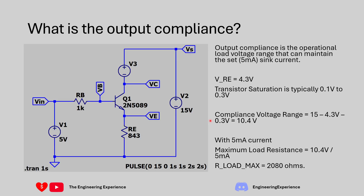The second part of the question requires calculating output compliance. Output compliance is the operational load voltage range over which the circuit can maintain the set current — 5 milliamps in this case. To evaluate it, we replace the load with a variable voltage source. VRE is 4.3 volts. When the transistor is fully saturated, the collector-emitter voltage is typically 0.1 to 0.3 volts; for worst case I'll use 0.3 volts. So compliance voltage = 15V − 4.3V − 0.3V = 10.4 volts.